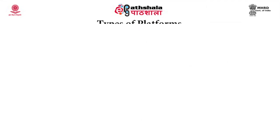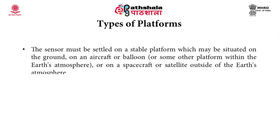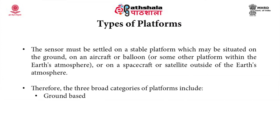Coming to the third and major topic of this module: types of platforms. The sensor must be settled on a stable platform which may be situated on the ground, on an aircraft or balloon or some other platform within the earth's atmosphere, or on a spacecraft or satellite outside of the earth's atmosphere. The three broad categories are ground-based platforms, airborne platforms, and satellites.